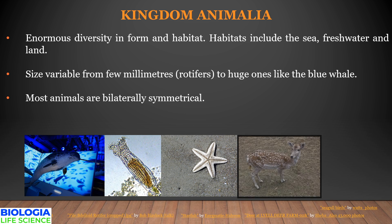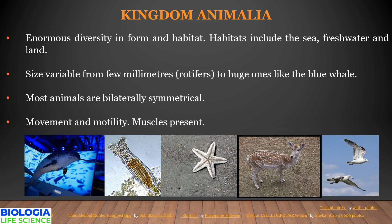Most of the animals are bilaterally symmetrical, while others like sponges are asymmetrical. Coelenterates and echinoderms are radially symmetrical. We will be discussing about symmetry in our next video.